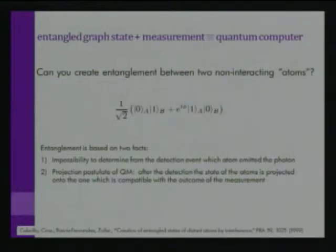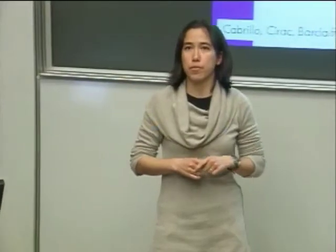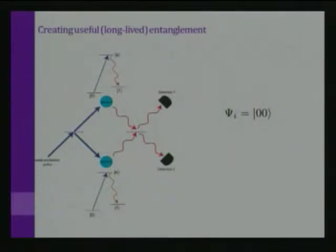This entanglement is based on two facts: the impossibility of determining from the detection event which atom the photon came from, and the projection postulate of quantum mechanics — after detection, the state of the atoms is projected onto one compatible with the measurement outcome. Since both states are compatible, you're left with both in the entangled state. We don't want this to last just 10 nanoseconds; we want it to last longer, so we need another resource to store quantum information.